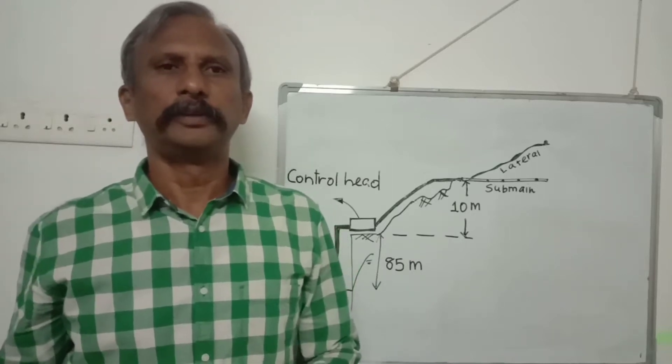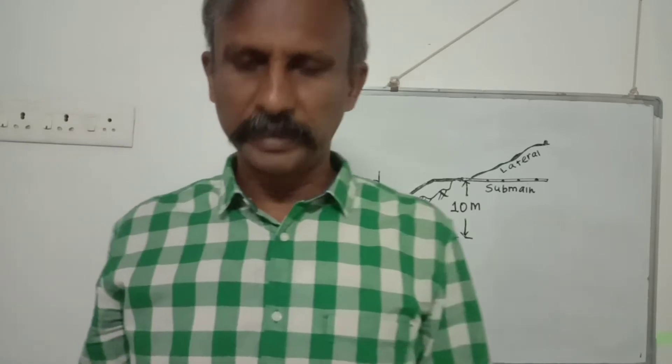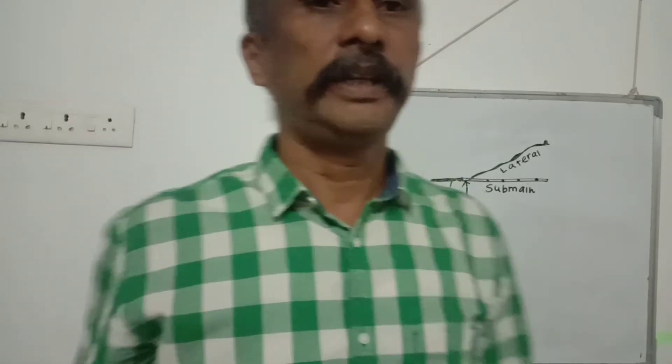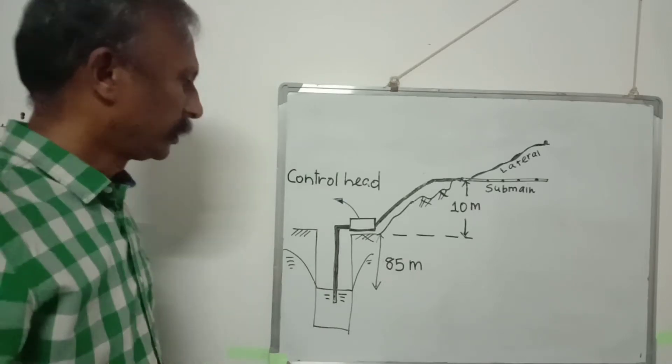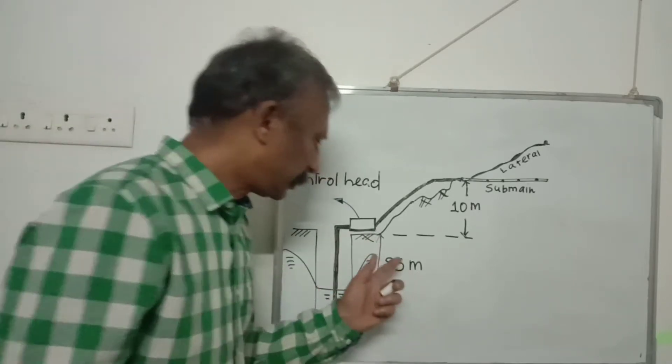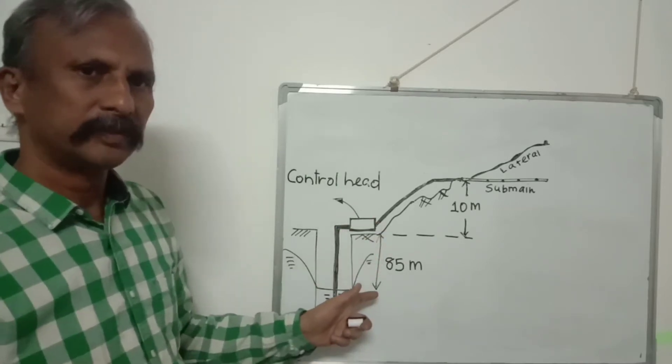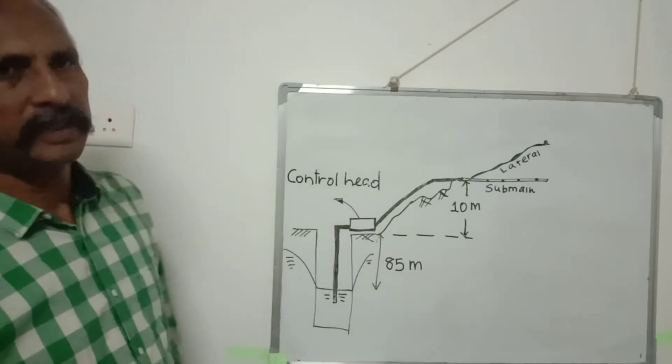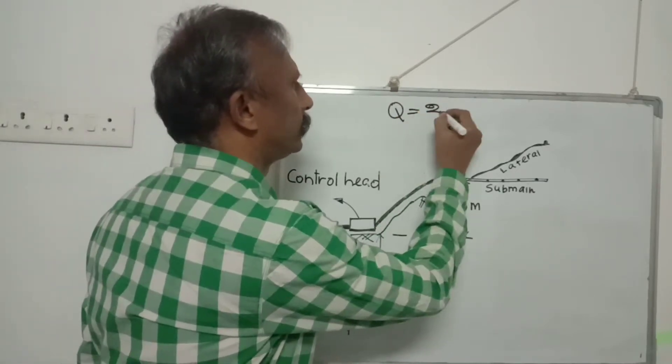Let us see how we can select a new pump for a new drip irrigation system. Here I have taken a real sample system in which when pumping is done, the required discharge rate is 2 liters per second.